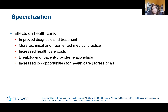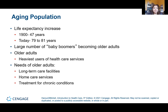Another thing affecting healthcare now is the age of our population. Life expectancy has increased from 47 years around 1900 to about 80 years now. Our baby boomers are now older adults and are our heaviest users of healthcare services — they need more long-term care, more home care, and more treatments for chronic conditions.